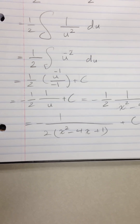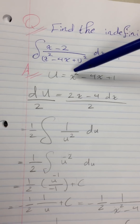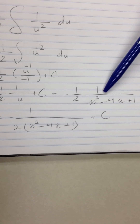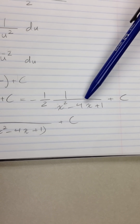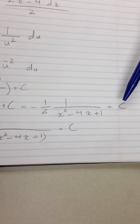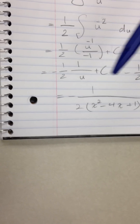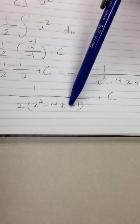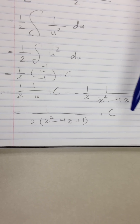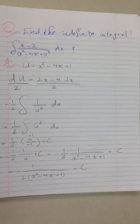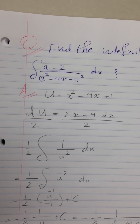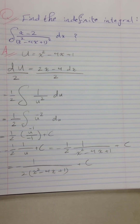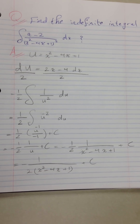Finally, we substitute back: u = x² − 4x + 1. So the answer is negative 1 over 2 times 1 over (x² − 4x + 1), plus C — which equals negative 1 over [2(x² − 4x + 1)] plus C. Take a final look at the question and follow it step by step. I hope you understand it, thank you very much.